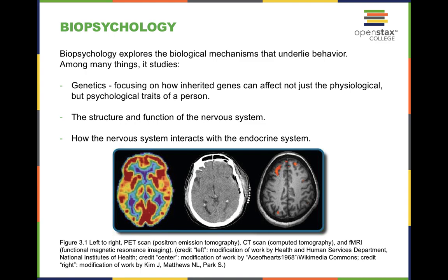So what is biopsychology? Biopsychology includes both biology as well as psychology and how they intermingle together. This field of study looks at your genetics and how they influence you, not just behaviorally, but also physiologically. It also looks at the structure and the function of the nervous system. The field that particularly focuses on the study of the nervous system is known as neuroscience. Biopsychology differs from that in that it includes other features such as how your genes — what you get from your parents — influence you, along with how the nervous system interacts with your endocrine system.